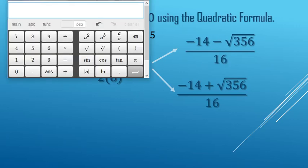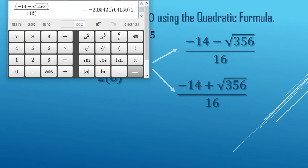Now it is time to go to the calculator again. Don't forget parentheses when you do this. So we're going to do negative 14 minus the square root of 356, and that's going to be divided by 16, and we get negative 2.05 for that one there.